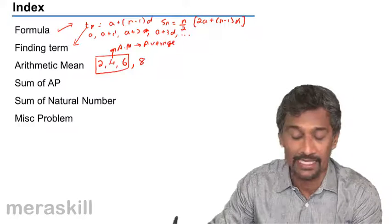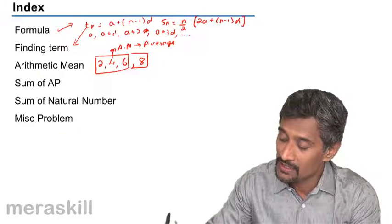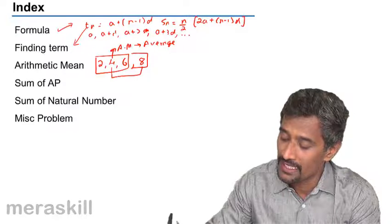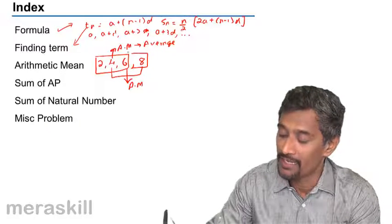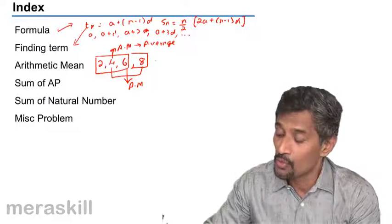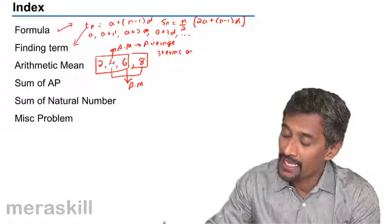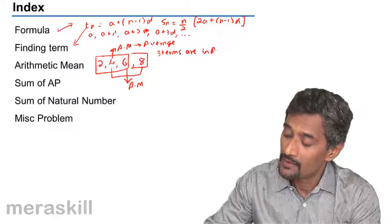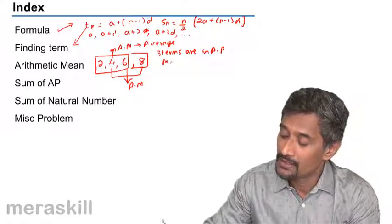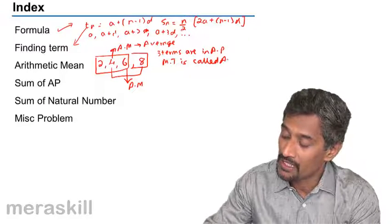2 plus 6 equals 8, divided by 2 is 4. Similarly, if you consider 4, 6, and 8, 6 is the arithmetic mean of 4 and 8. 4 plus 8 equals 12, divided by 2 is 6. So whenever three terms are in AP, the middle term is called the arithmetic mean of the extremes.